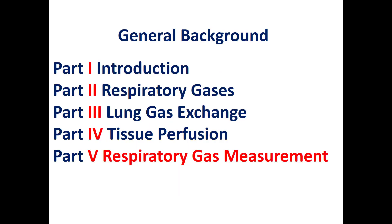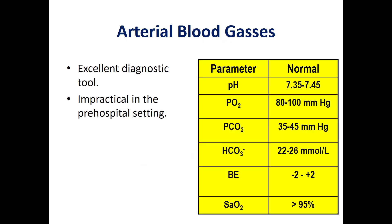Finally, now we will talk about respiratory gas measurement. Arterial blood gas analysis is an excellent diagnostic tool, but impractical in pre-hospital settings. What we measure in this diagnostic tool includes the pH, and we know that CO2 has a great impact on pH.